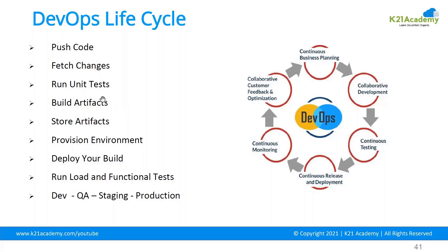DevOps practices span all the cycles from pushing code and running unit tests. For example, when pushing code you use tools like Git locally and push to GitHub, then use a unit test like JUnit. You store outputs in artifacts — a location where you store build outputs of a compilation — and using those outputs you provision environments: test, dev, staging, and then production. In staging, which is a pre-prod replica of production, you also do performance testing.